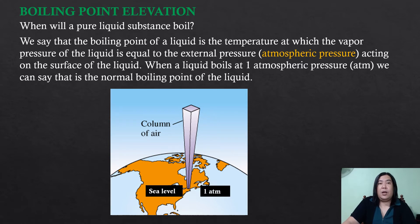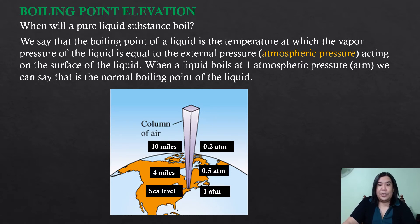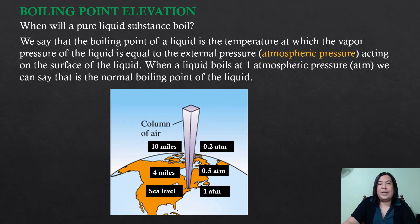At sea level on Earth's surface, the atmospheric pressure is 1 atm. But as you go higher, you can see that the atmospheric pressure lessens in value. So at higher altitude, there is less atmospheric pressure compared to lower altitude. That is why cooking food at higher altitude takes much longer compared to lower altitude.